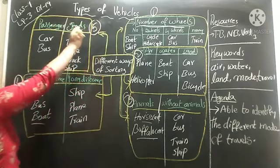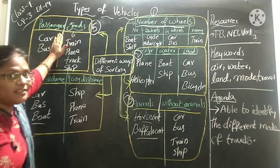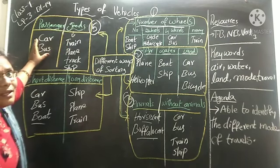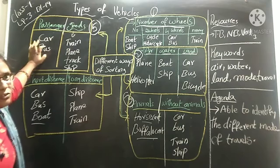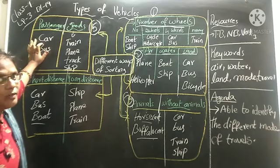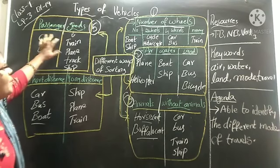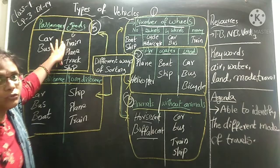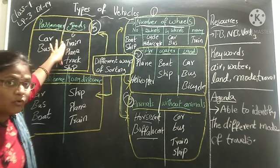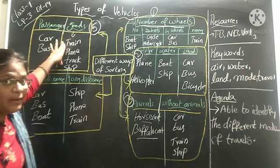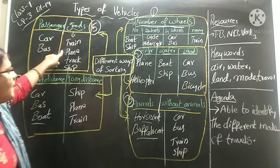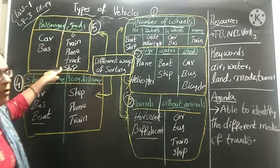And coming to the next point — passengers and goods. So many people move from one place to another by bus. If we have cars, we move by car. But sometimes they also move goods. Trucks take goods from one place to another. Train, planes, truck, ships — everything will carry goods from one place to another.